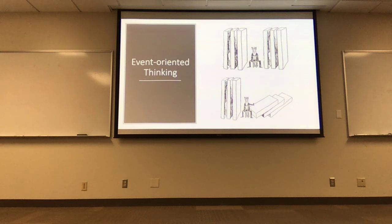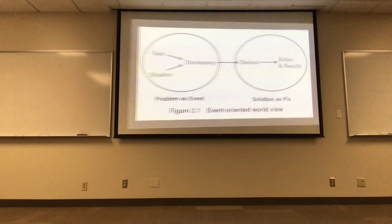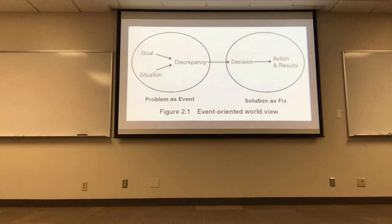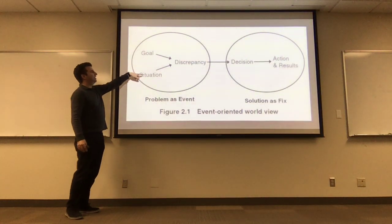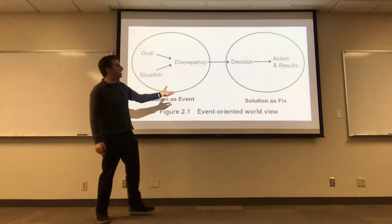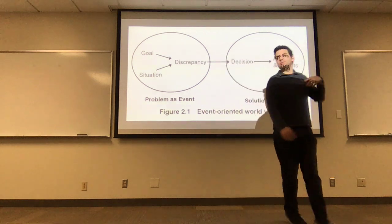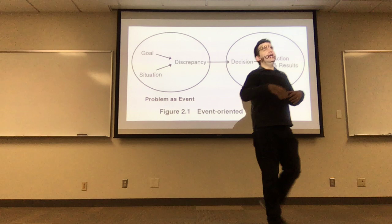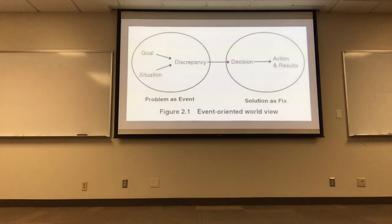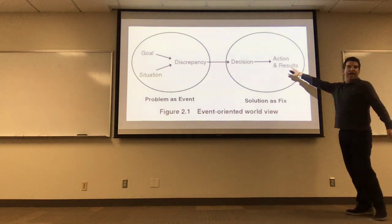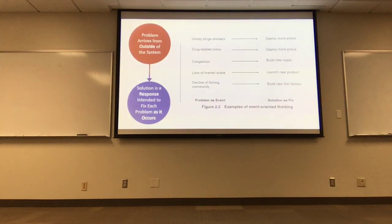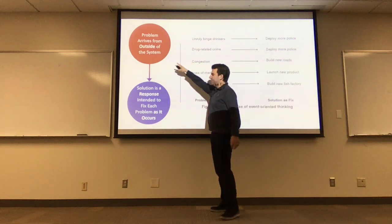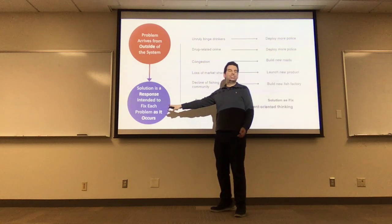The chapter started talking about the way a lot of decision-making is an event-oriented model. In the event-oriented model, you just respond to problems as they occur with a local solution. There's a figure in the chapter: we have a goal and a situation that generates some discrepancy, so we take some immediate action through this decision, and then hopefully those results end up solving this discrepancy. The potential issue is we might not be thinking of the downstream effects of whatever this action is and whether in the long term we actually end up solving the main problem. The thought here is that the problem arrives from outside of the system, and our solution is to patch that particular problem.